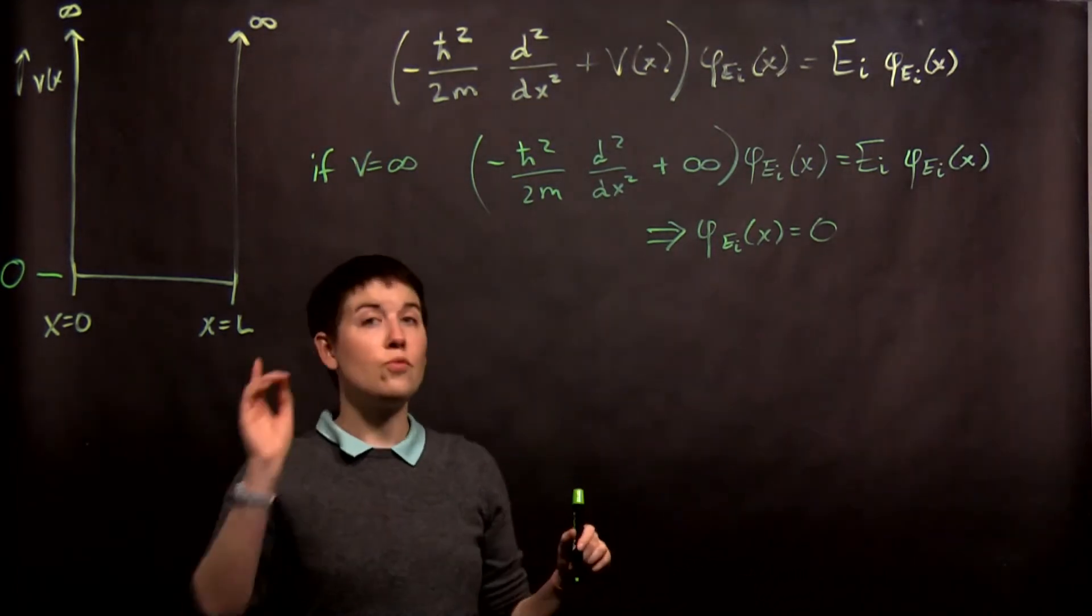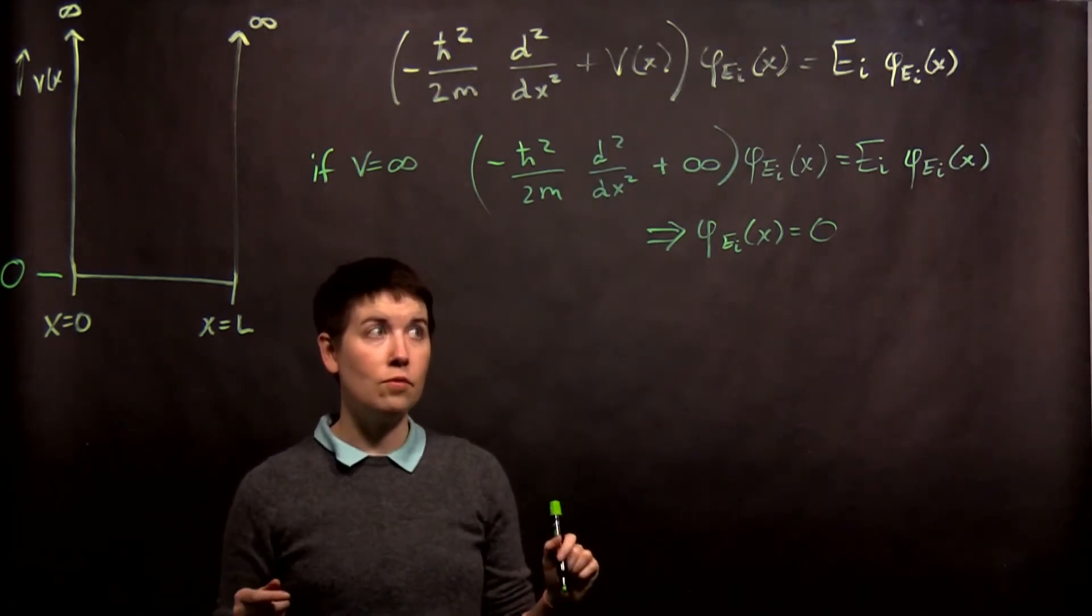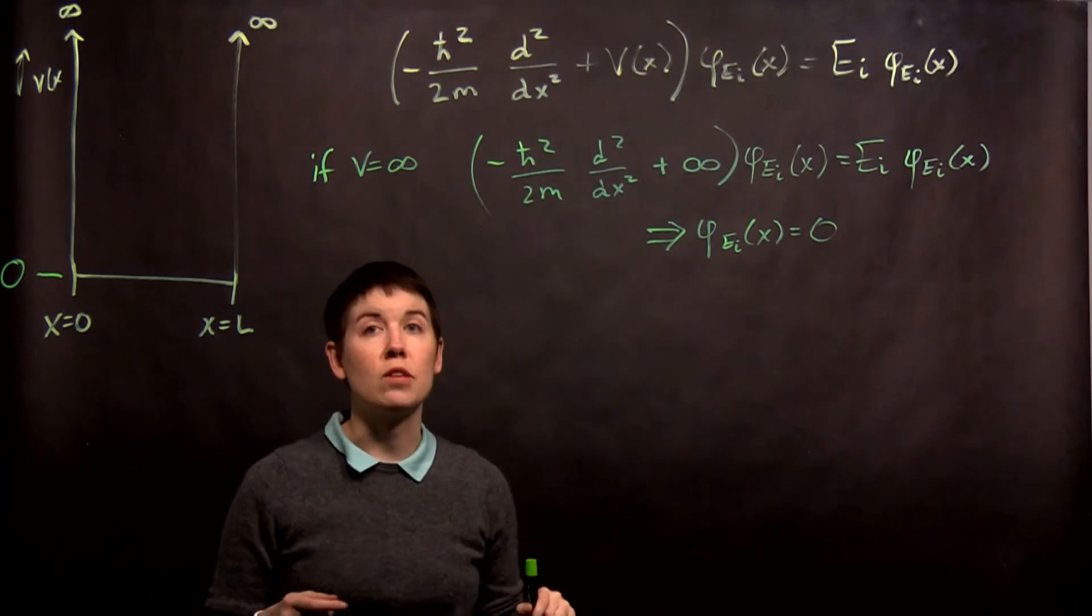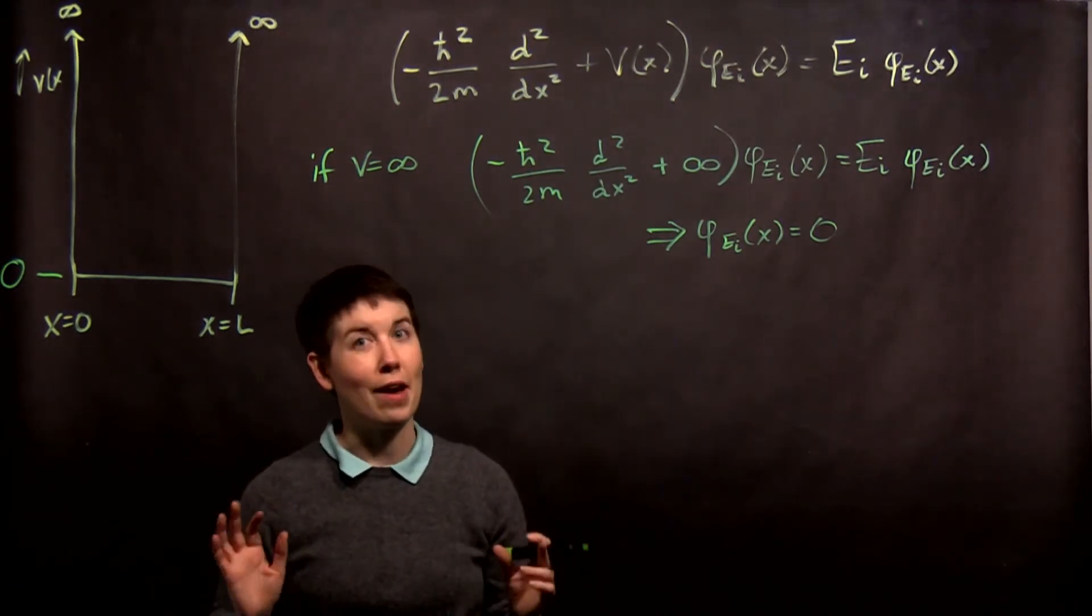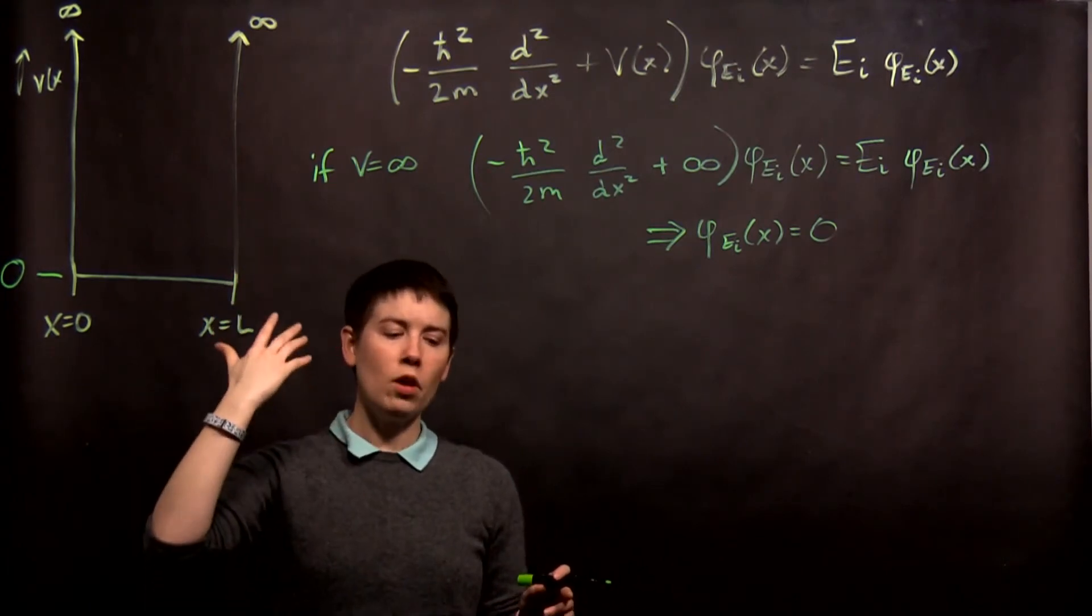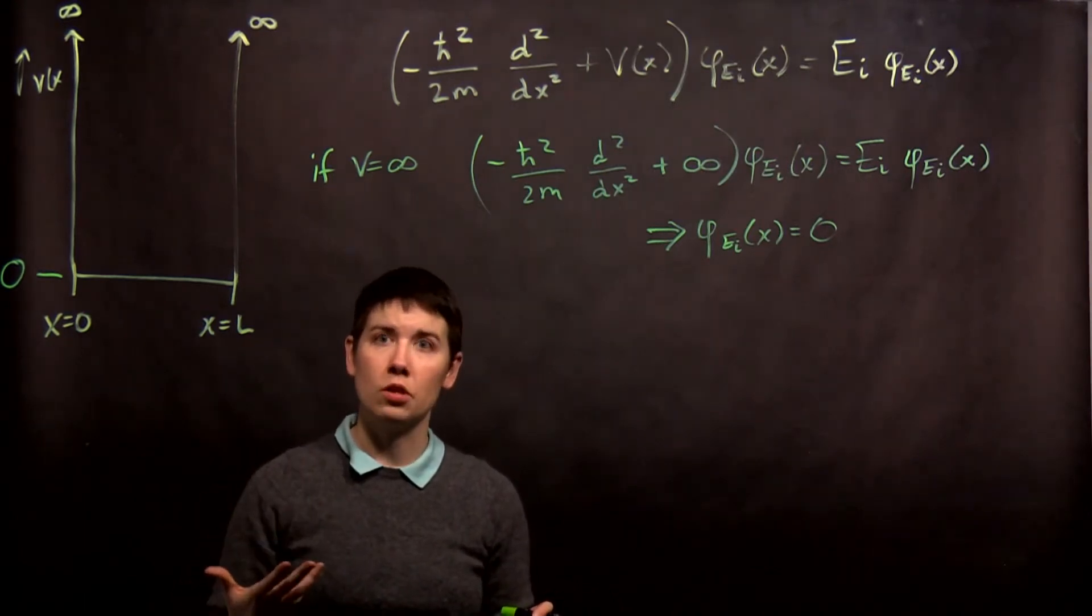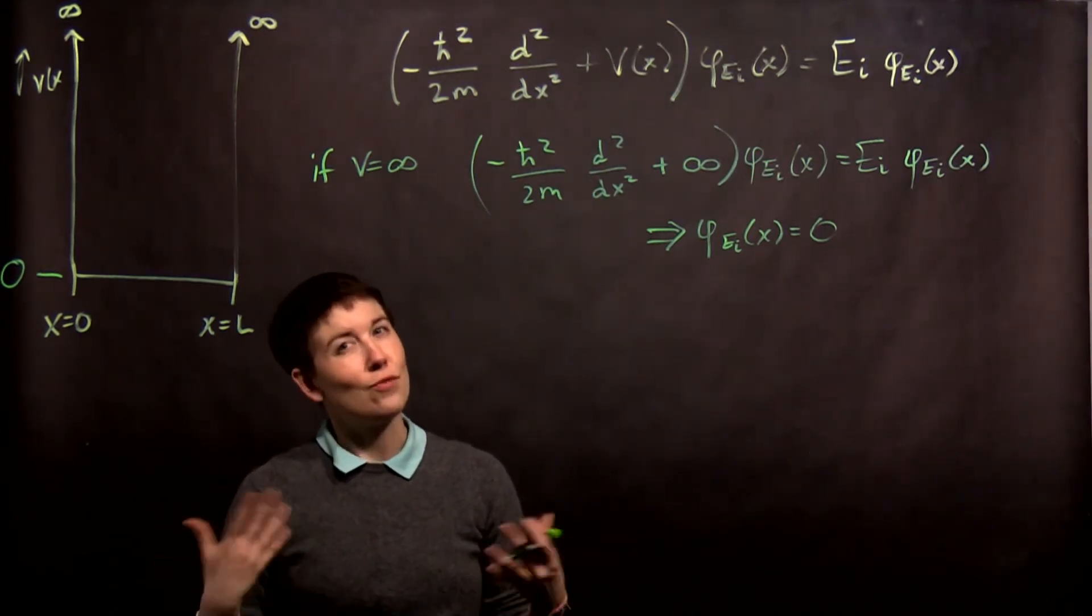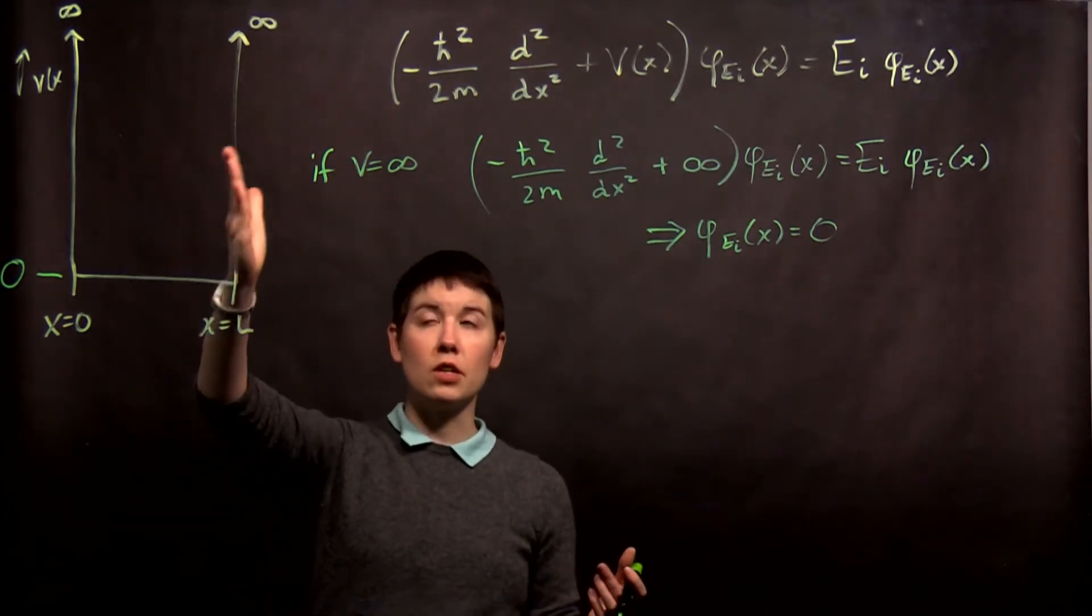So what we've just learned is for the regions where the potential is infinite, in fact, we have zero probability of being found there. Now there's a physical interpretation of this, especially if you don't like my math of just plugging in infinity. Right? This is a box, and remember that the derivative of potential energy is force, or the integral of force gives you potential energy. So your particle is in here, and then it's getting to this wall.